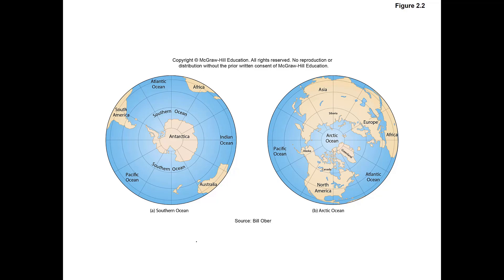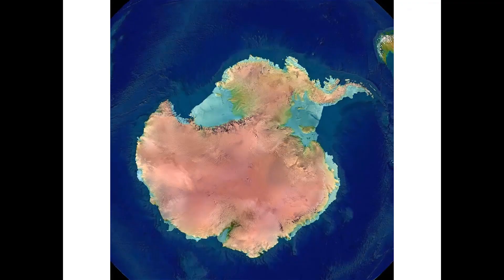Another thing you may not be aware of is the general shape of Antarctica. I remember hearing the shape of Antarctica described as being a duck shape, and since I've heard that, I can't unsee it. Antarctica is in the shape of a duck and the Southern Ocean entirely surrounds it.